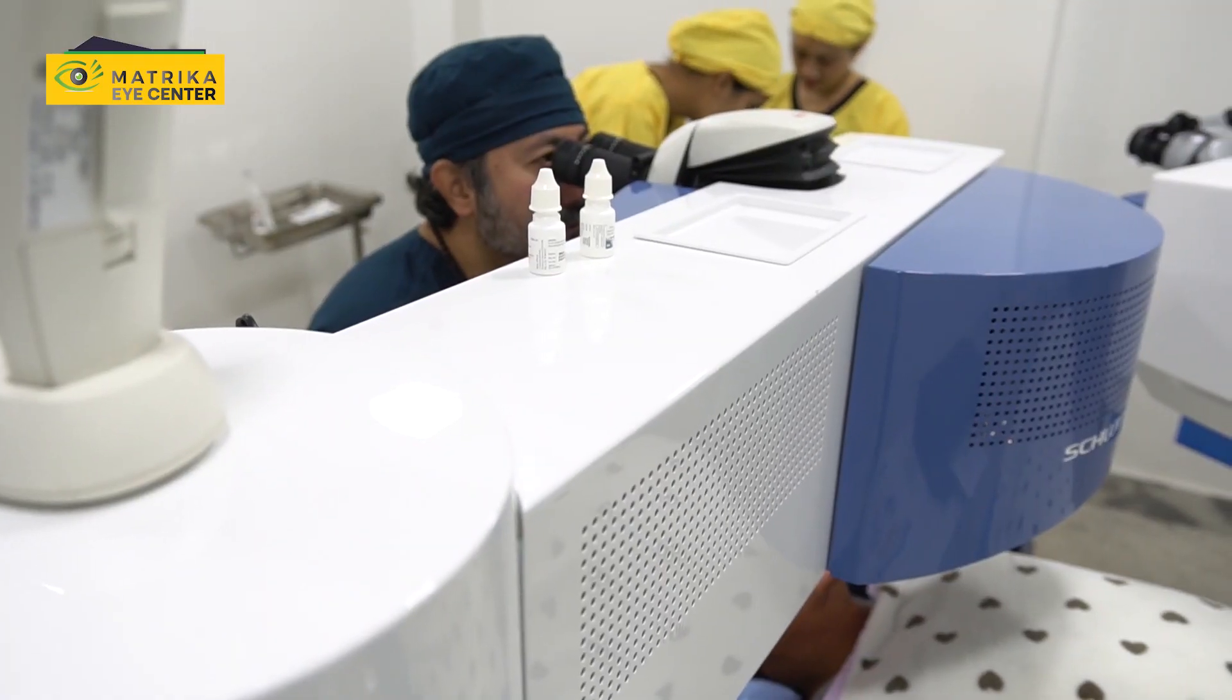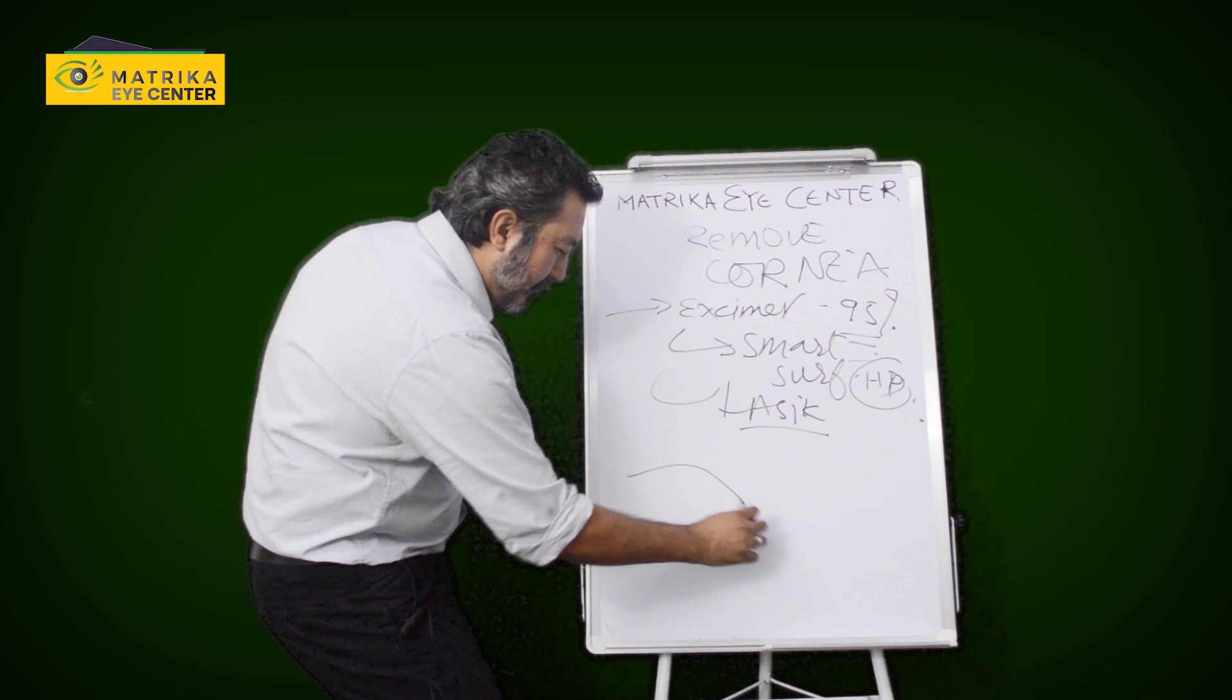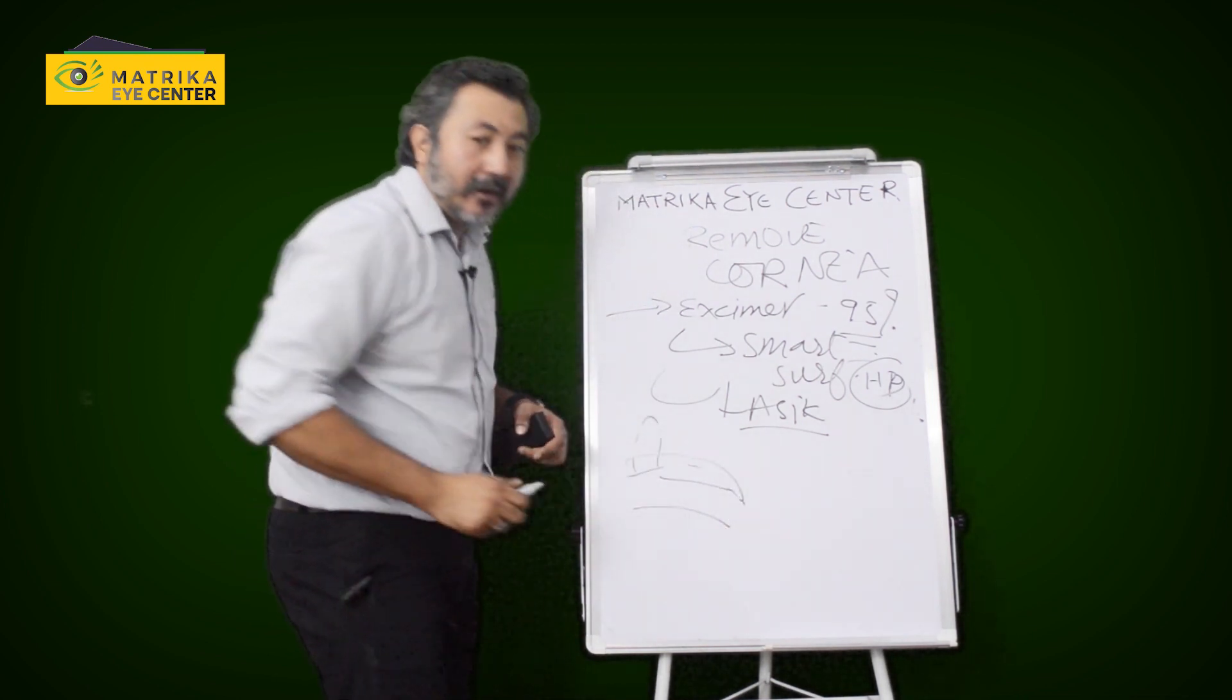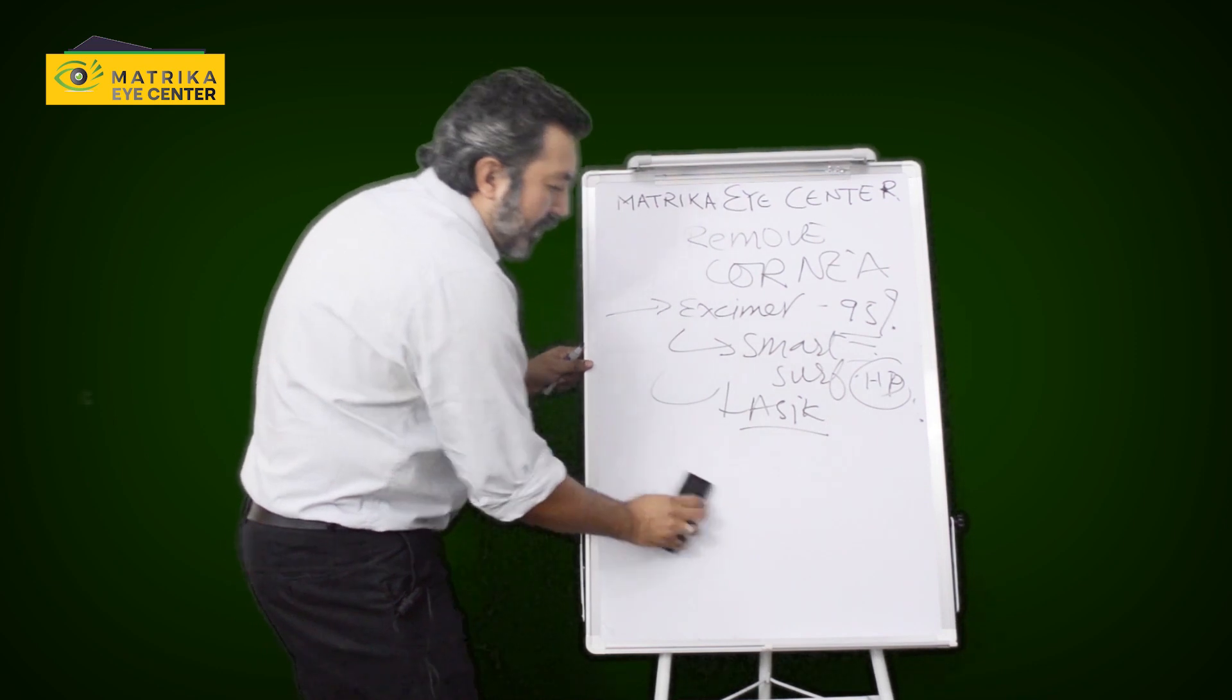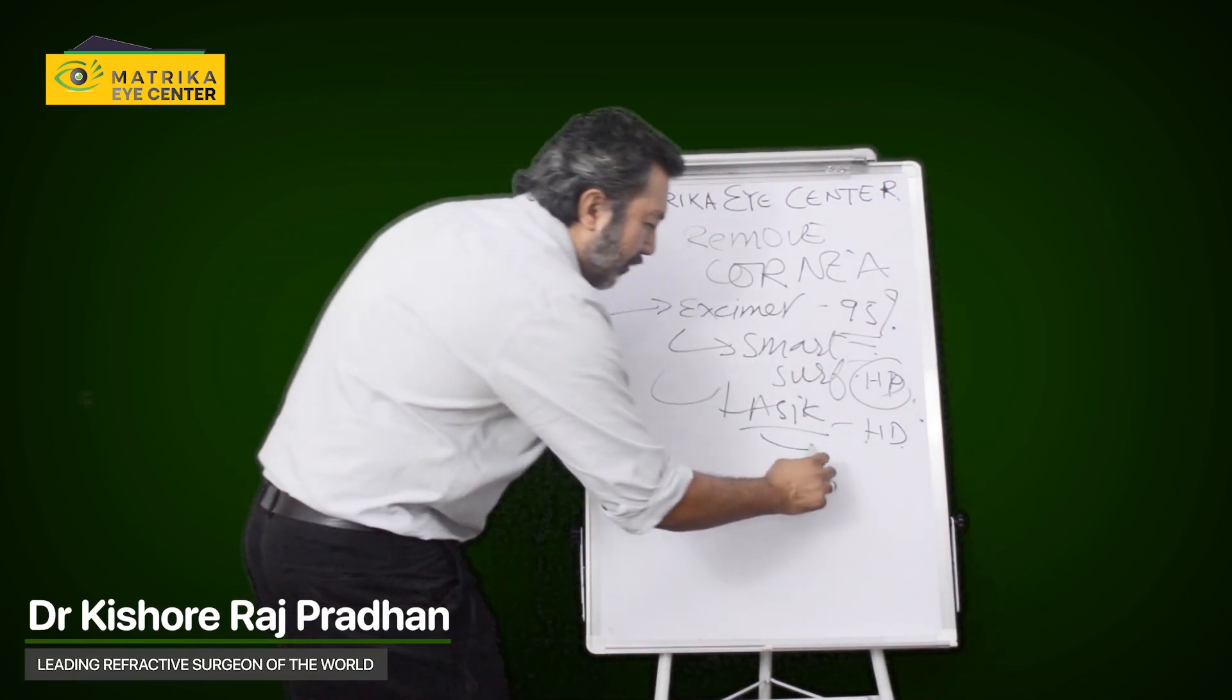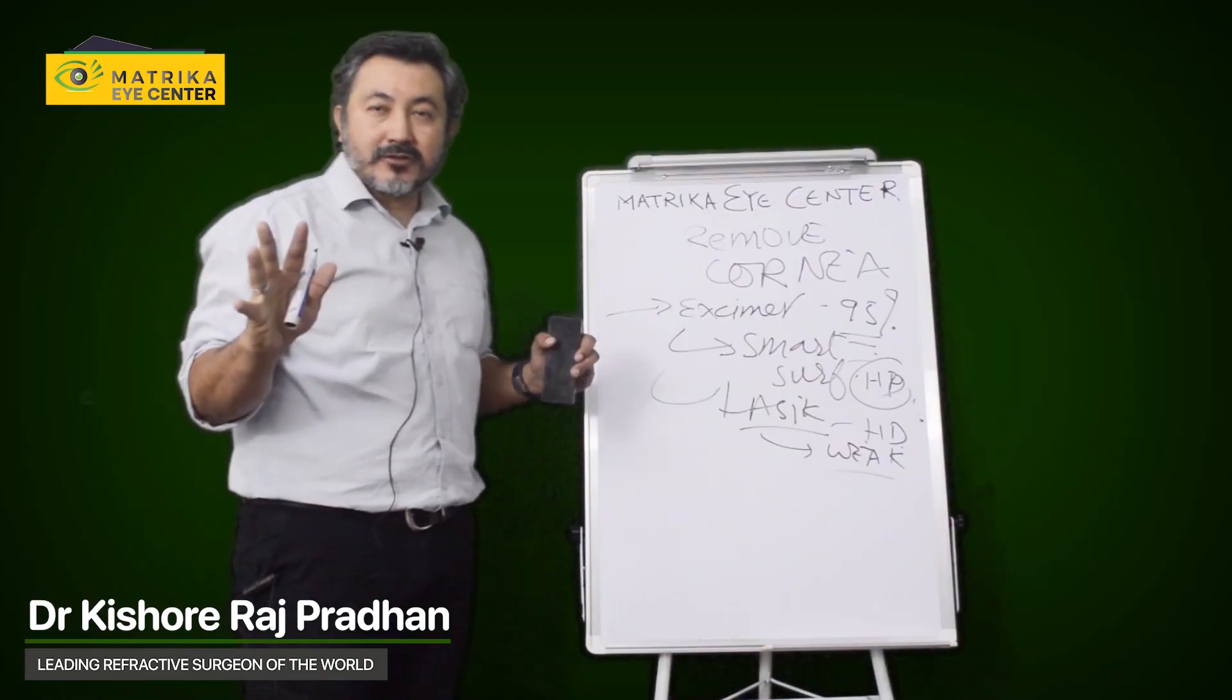Then you have LASIK, where you cut the cornea a little bit. You lift up the flap. So this is the cornea. You cut the cornea. You lift up the flap. You put the laser. And then you put the flap back. Now this is something. The vision is very, very great. Also gives you HD vision. But it makes the cornea a little weak. It is okay for small treatments.